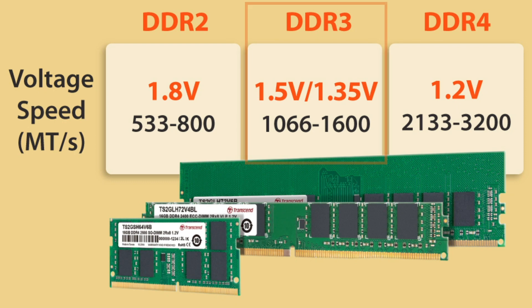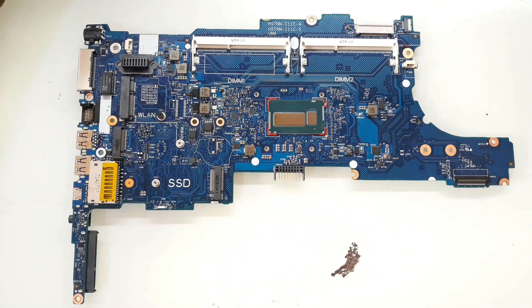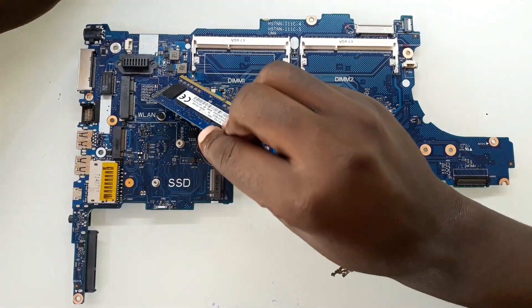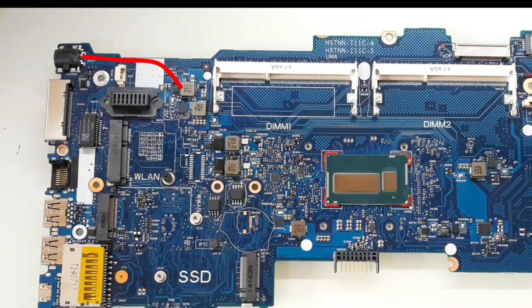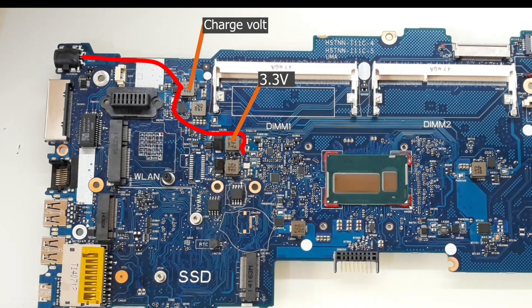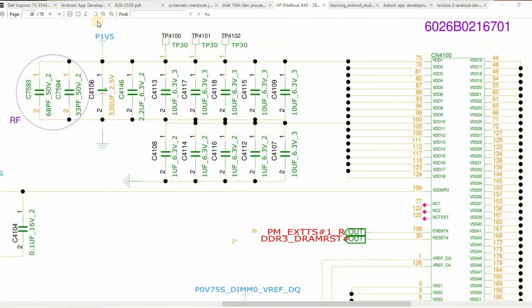The first kind of voltage I will look at is 1.5 volts. DDR3 RAM uses 1.5 volts and DDR3L uses 1.35 volts. This motherboard I'm having here supports DDR3 and DDR3L. This coil is the one that gives out the RAM volts, and when you put in the charger, the first type of volts to come out is the charging volts. Then after the charging volts, 3.3 volts come up, then 5 volts come up, then all RAM volts come up. So 1.5 volts is the general power that powers up the whole RAM circuit.